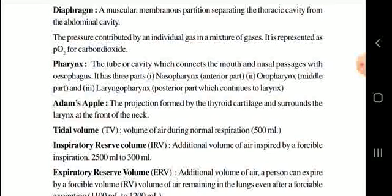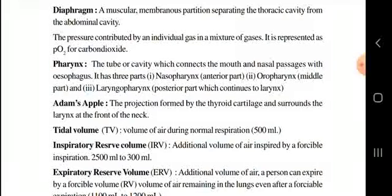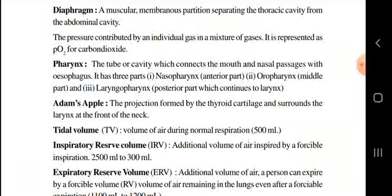Next, the pharynx. The pharynx is the tube or cavity which connects the mouth and nasal passages with the esophagus. It has three main parts: the nasopharynx (anterior part), the oropharynx (middle part), and the laryngopharynx (posterior part), which continues to the larynx.